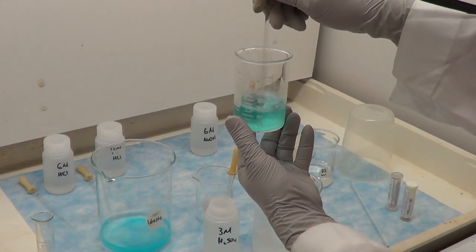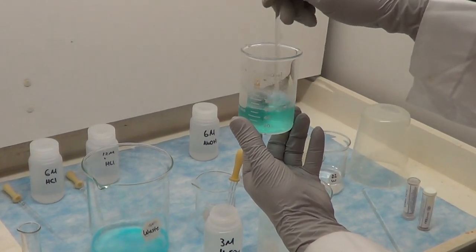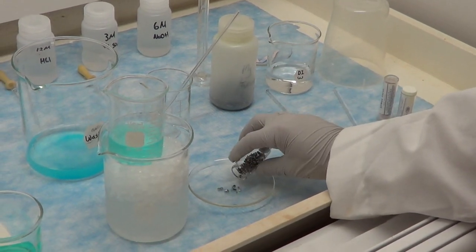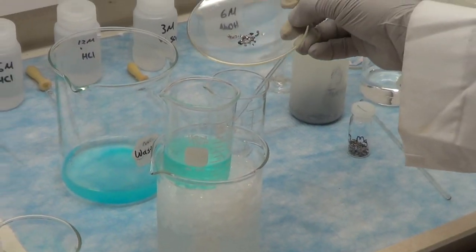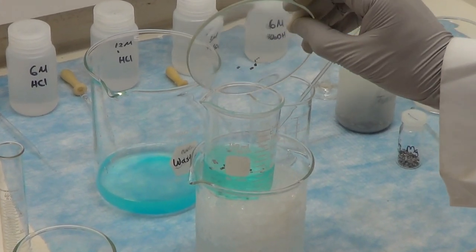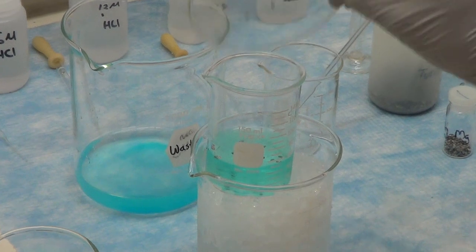Once the precipitate is completely dissolved, we will add few pieces of magnesium into it. Here magnesium displaces copper from copper hydroxide to form magnesium hydroxide and copper as a solid. This is a displacement reaction.